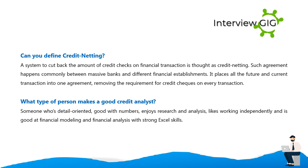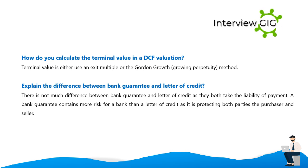What type of person makes a good credit analyst? Someone who is detail-oriented, good with numbers, enjoys research and analysis, likes working independently, and is good at financial modeling and financial analysis with strong Excel skills. How do you calculate terminal value in a DCF? Terminal value uses either an exit multiple or the Gordon Growth (growing perpetuity) method.